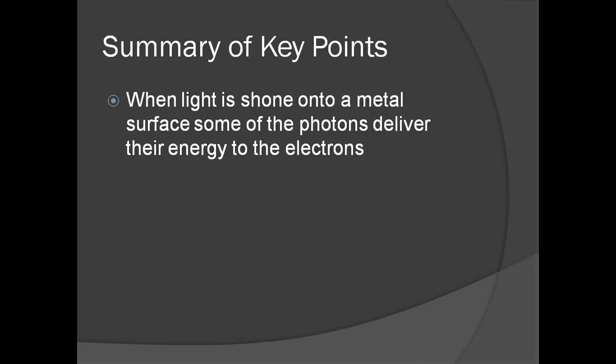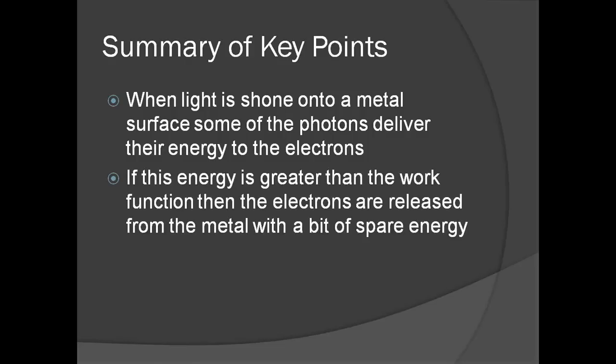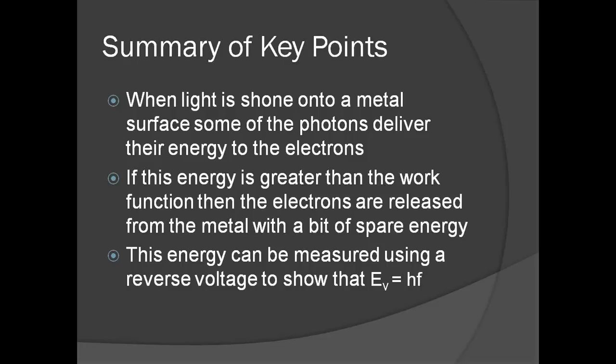These are the key points. When light shines on a metal surface, the photons deliver energy to the electrons in the metal lattice. If the energy of the photon is sufficient, the electrons receive enough energy to be released from the metal, with a little kinetic energy to spare. This spare kinetic energy can be measured. If the stopping potential is measured for different frequencies of light, we discover that E equals HF.